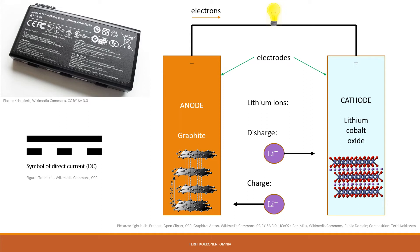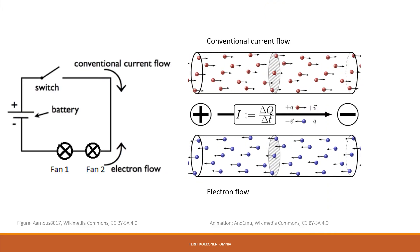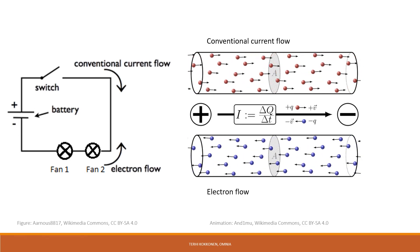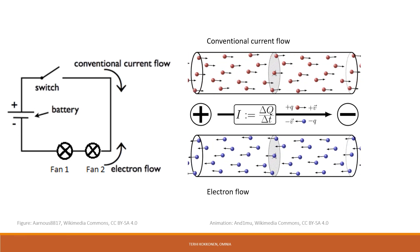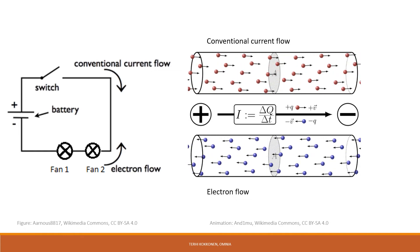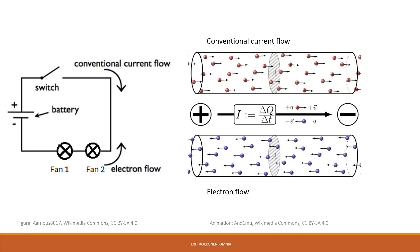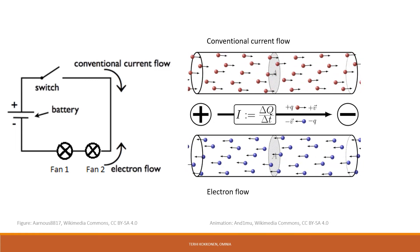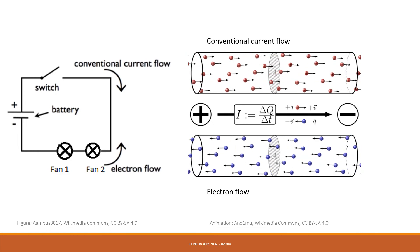All batteries, including lithium-ion batteries, operate with direct current (DC). In direct current, electrons flow steadily in one direction. With a direct current, current always flows from positive to negative. An electric current is actually caused by a flow of electrons moving from a negatively charged end to a positively charged end. This movement of electrons towards the positively charged end is known as electron flow.